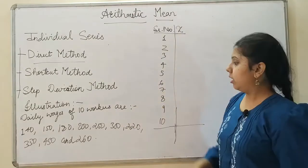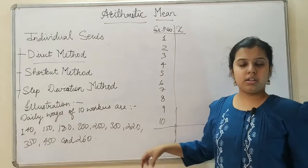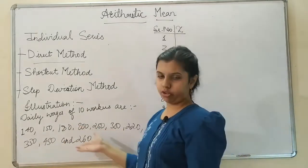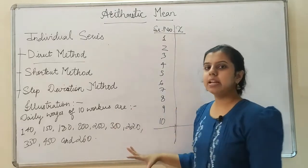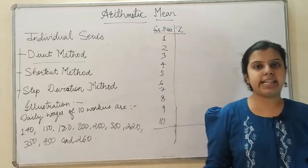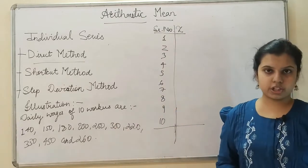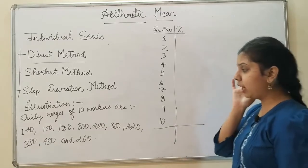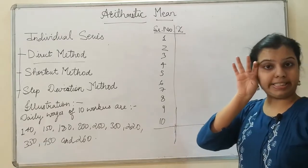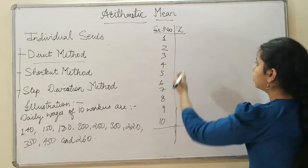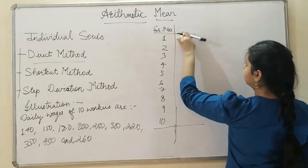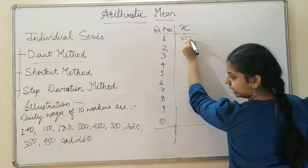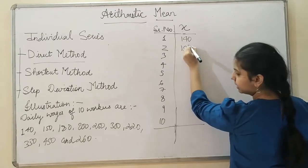For better understanding, if I have a set of data or some values, I will arrange them in ascending order as per my convenience. So this data I will be arranging in ascending order. My X starts with 140, then 150 is next.